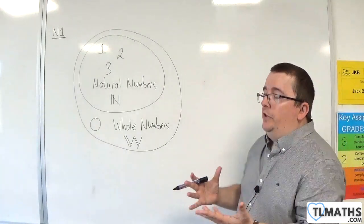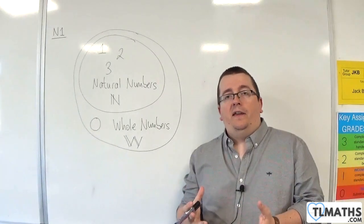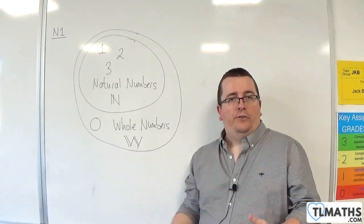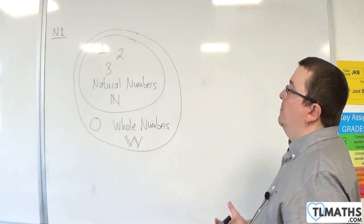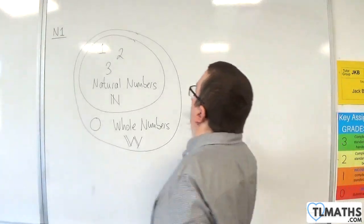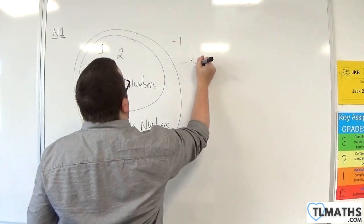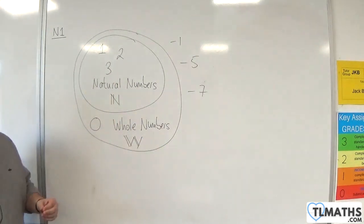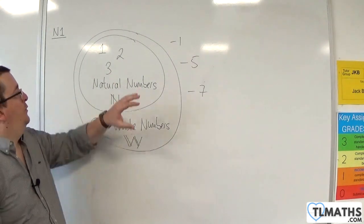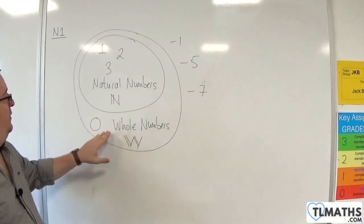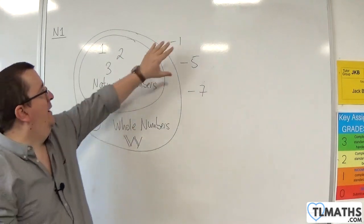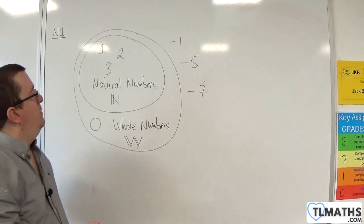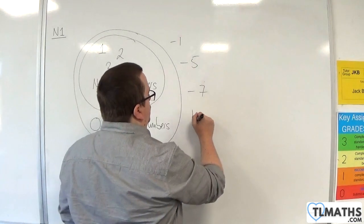Then you start learning about minus 1, minus 2, minus 3, minus 4 — you go into the negative numbers. So, minus 1, minus 5, minus 7. Now, if you include all of the natural numbers, and 0, and all of the negatives, we refer to them as integers.